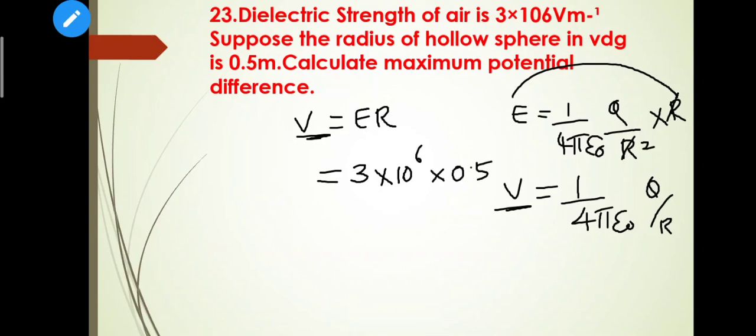E value is 3×10⁶, r value is 0.5 meter. Multiplying: V = 3×10⁶ × 0.5 = 1.5×10⁶ volt, or 1.5 megavolt. This is the answer. I hope you are clear with this, thank you.